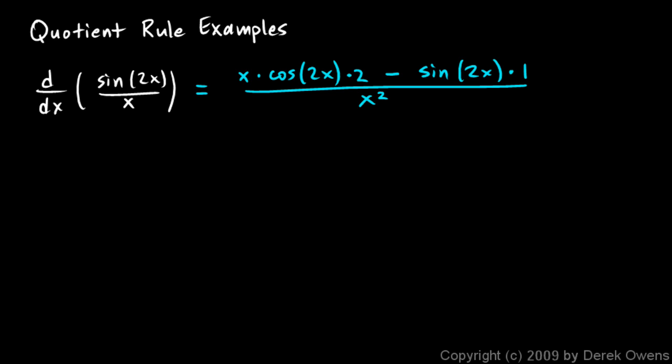And again, we could rewrite this, obviously take out that 1, and put the 2 out front so that's 2x times cosine of 2x. That would be the more typical form. But that's our answer, the derivative of sine 2x over x.